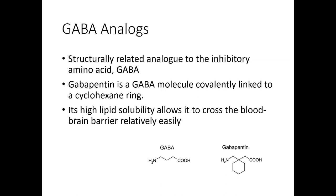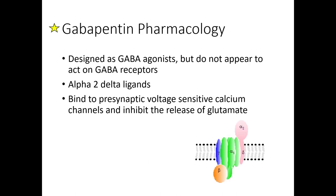The next GABA analog is gabapentin — more lipid soluble so it crosses the blood-brain barrier relatively easily. Although designed as a GABA agonist, gabapentin does not appear to act on GABA receptors directly. What we've observed is that it binds to presynaptic voltage-sensitive calcium channels and inhibits the release of glutamate — blocking calcium influx that would otherwise trigger neurotransmitter release, thereby inhibiting glutamate release.